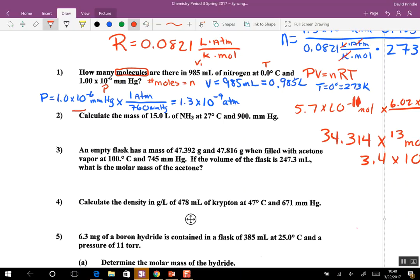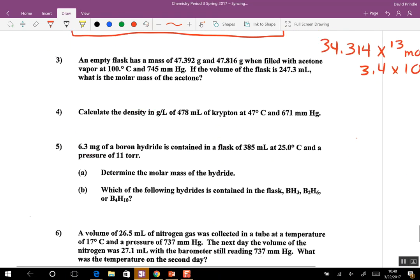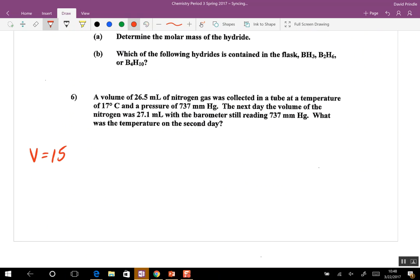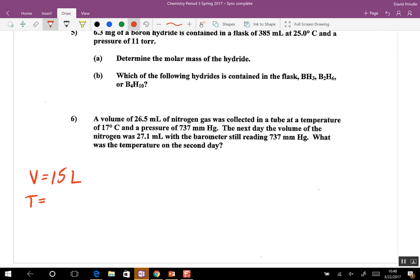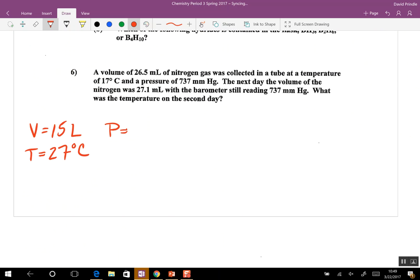Now we're going to look at this one. Calculate the mass of 15 liters of ammonium at 27 degrees C and 900 millimeters. So I'm going to go down here and write everything down. Volume is 15 liters. We're doing number two here. Temperature is 27 degrees C, and pressure is 900 millimeters of mercury. We're looking for mass of NH3.